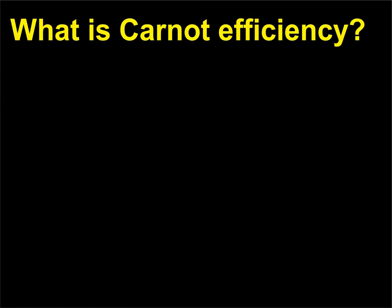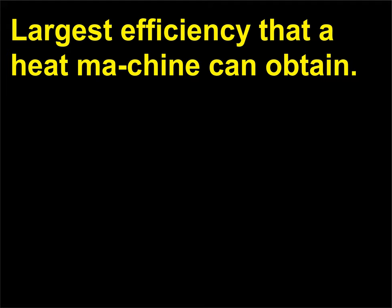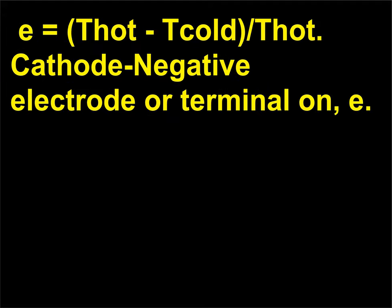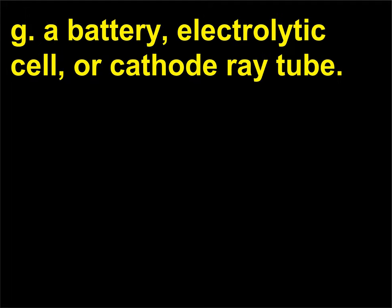What is Carnot efficiency? It is the largest efficiency that a heat machine can obtain: E = (T_hot − T_cold) / T_hot. What is a cathode? It is the negative electrode or terminal on a battery, electrolytic cell, or cathode ray tube.